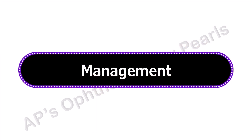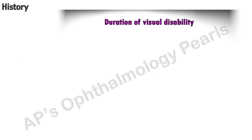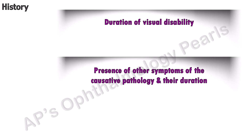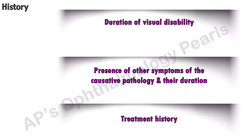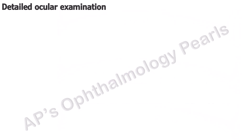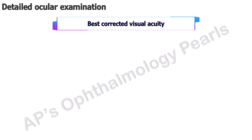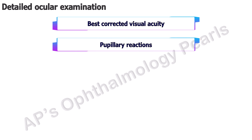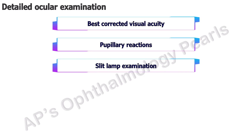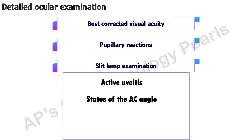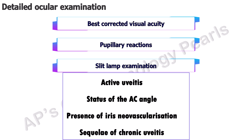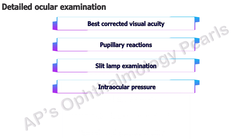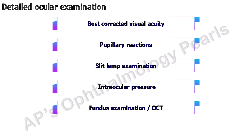A thorough evaluation is required in a complicated cataract. Detailed history regarding the duration of visual disability, the presence of other symptoms of the causative pathology, their duration, and treatment history, particularly the use of corticosteroids. Detailed ocular examination includes best corrected visual acuity, pupillary reactions to rule out a relative afferent pupillary defect (RAPD) that could suggest retinal or optic nerve involvement, slit-lamp examination for active uveitis along with gonioscopy for status of the angle of anterior chamber, to look for neovascularization of the iris and sequelae of chronic uveitis such as synechiae and inflammatory membranes. Intraocular pressure measurement for evidence of secondary glaucoma, fundus examination for status of retina, and OCT for evaluation if any findings are present.